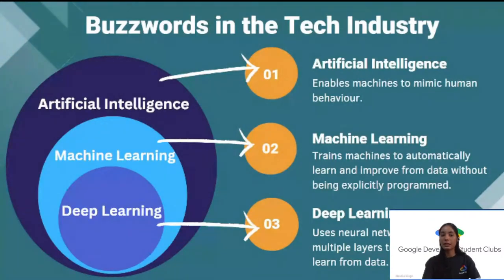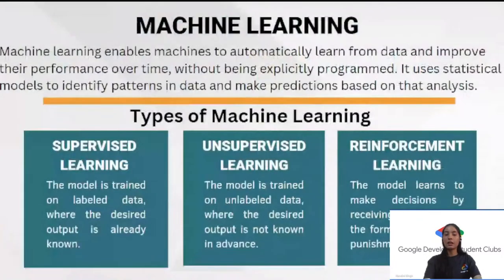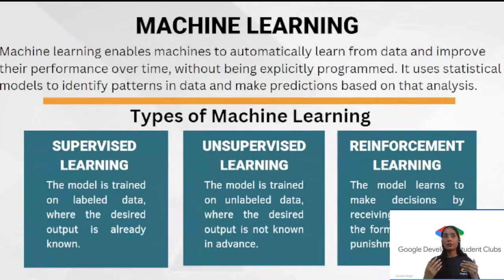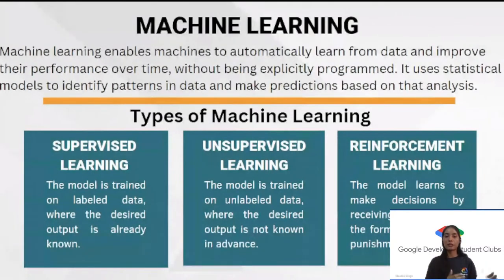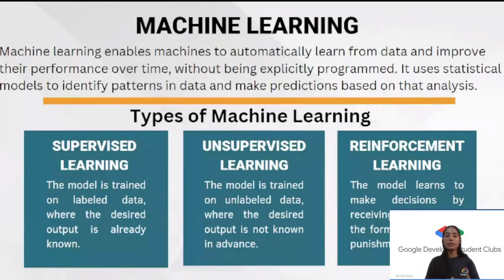We as humans have evolved from the stone age, learning a lot from our past experiences. In machine learning, you are not explicitly programming machines — you provide them data, and with that experience they improve over time. Machine learning is divided into three types: supervised machine learning, unsupervised machine learning, and reinforcement learning.